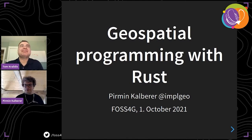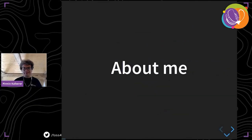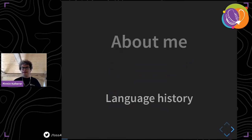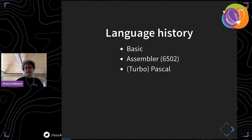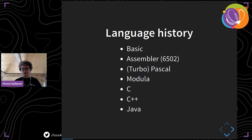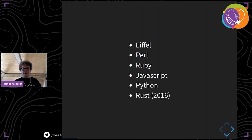Now, something completely different — programming with Rust. A few words about me, specifically my programming language history. I started with BASIC, and it was too slow, so I learned 8-bit assembler. Then came Turbo Pascal, later at university Modula, and also C and C++. After university I learned Java, later Eiffel, Perl, Ruby, JavaScript, Python, and finally in 2016 I learned Rust — and that's why I'm talking here.